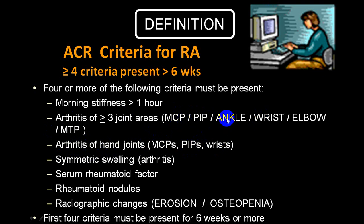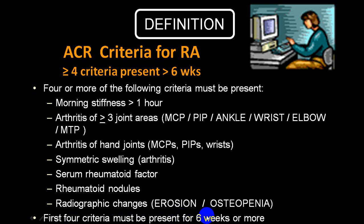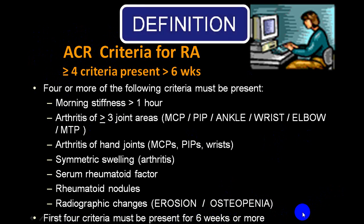Ankle and knee are also involved but less commonly. The condition is symmetrical. RA factor is positive in only 50–60% of people; 30–40% will be RA negative. Extra-articular manifestations include rheumatic nodules. Radiological examination shows erosion and osteopenia. At least four of these criteria must be present for more than six weeks to label as rheumatoid arthritis — this is the ACR criteria.